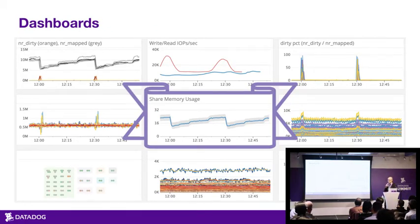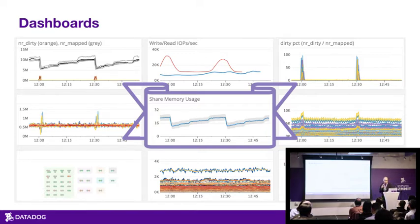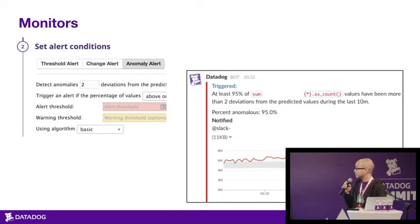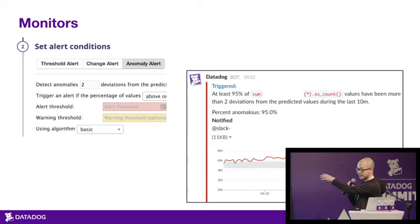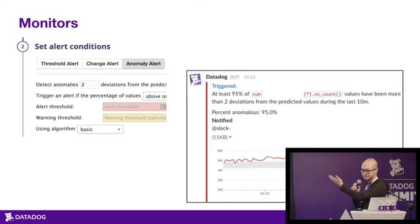It works really well for timeboards and screenboards — you stick it on and it'll be immediately obvious if your metric is being anomalous or not. It's just another function, so it's as simple as adding a function through the editor. You can also set up monitors, and if you've got an alert like this, it's clear — we expected this metric to be around 5 million, now it's around 6 million. You set it up so that if a certain percentage of the time over a window it's anomalous, you'll get an alert. A nice snapshot shows you it's outside the expected range of values.